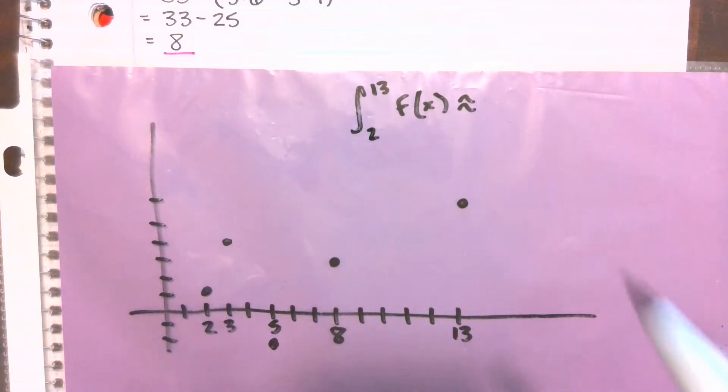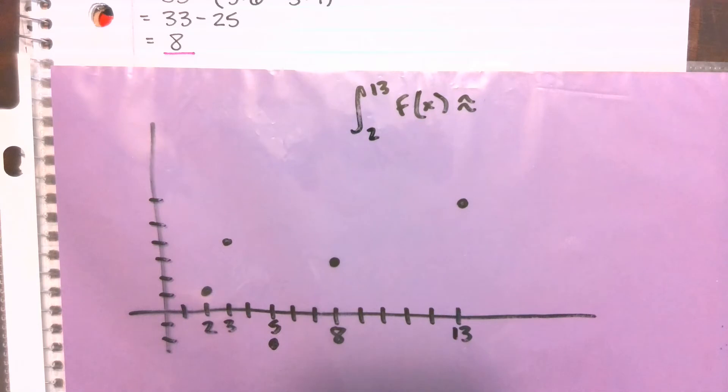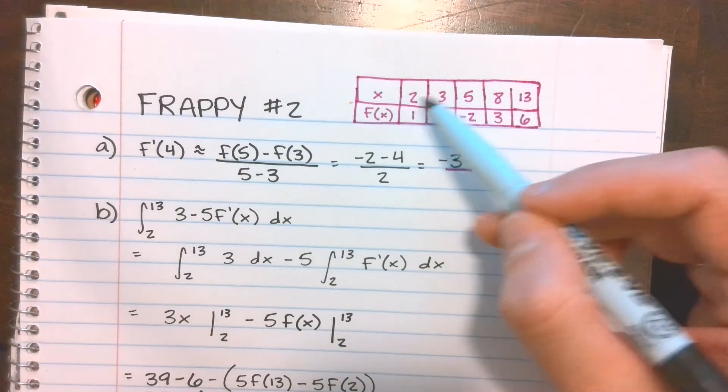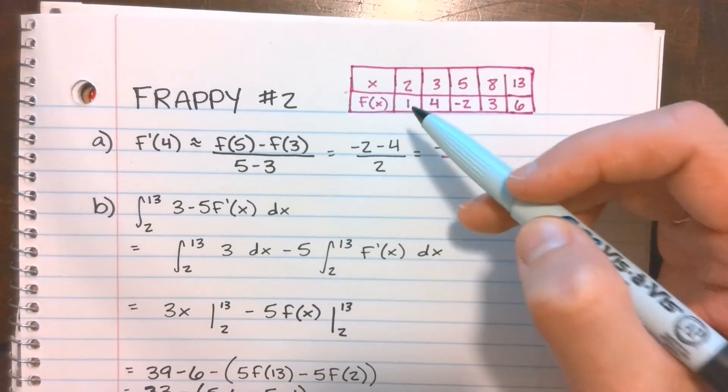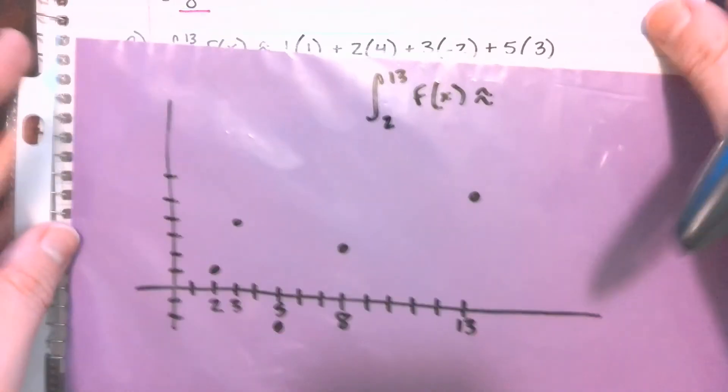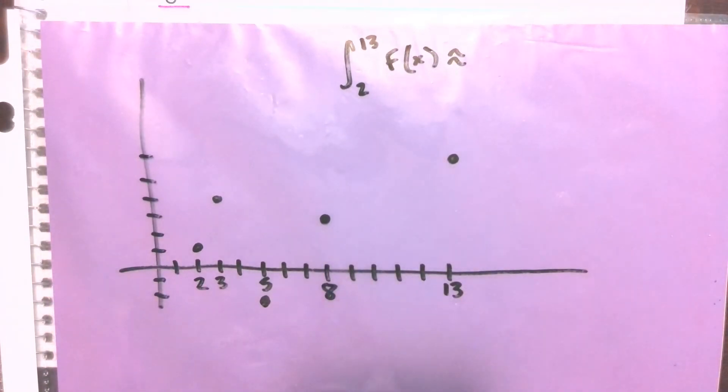For Part C, we're told to approximate the integral from 2 to 13 of f of x using a left Riemann sum. So this is not something that you would necessarily need to draw. You could just use your table here. Just every time you're imagining the rectangle in between two points, make sure you're choosing the y value on the left. But I did want to give us a little bit of idea of what we're looking at here to remind us what Riemann sums are talking about. First, notice on these that the x value distances are irregular.